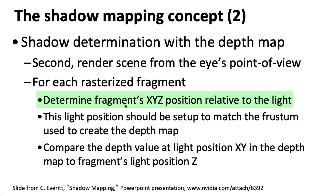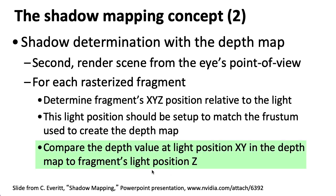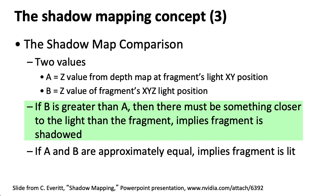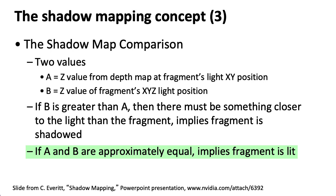While doing that, you compute the position of the particular point that you're trying to render relative to the light. Then you take the z-position relative to the light as you're rendering it and compare that to the z-value that's already stored in that depth map. If the z-position relative to the light of the point you're trying to draw is bigger than the z-value in the shadow map, it means there's something closer to the light than the pixel you're now thinking about drawing, and then that pixel must be in shadow. But if those values are about the same, you can assume there's nothing blocking the light and you go ahead and paint that pixel.